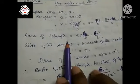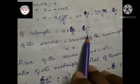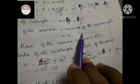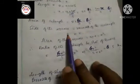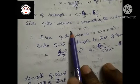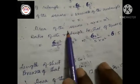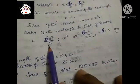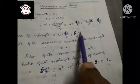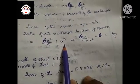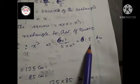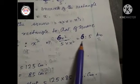Area of the rectangle will be x into 6x by 5, which means 6x² by 5. Side of the square is equal to breadth of the rectangle, which is x. Therefore area of the square will be x². Ratio of the rectangle to that of square means 6x² by 5 divided by x². The x² terms cancel and the answer will be 6 to 5.